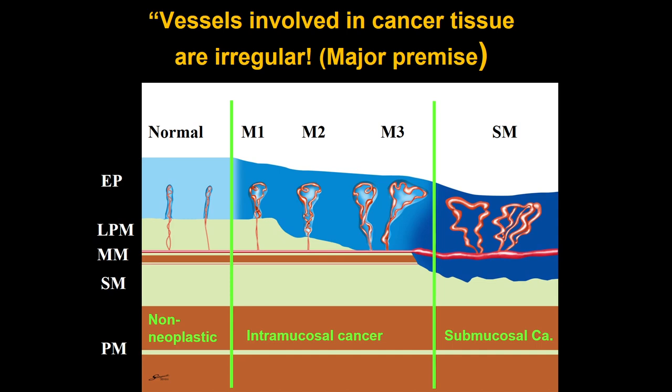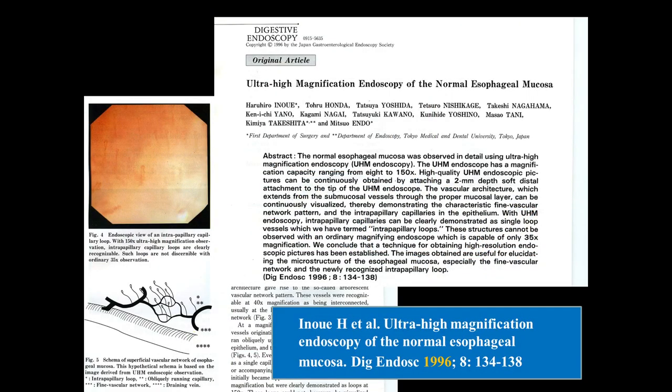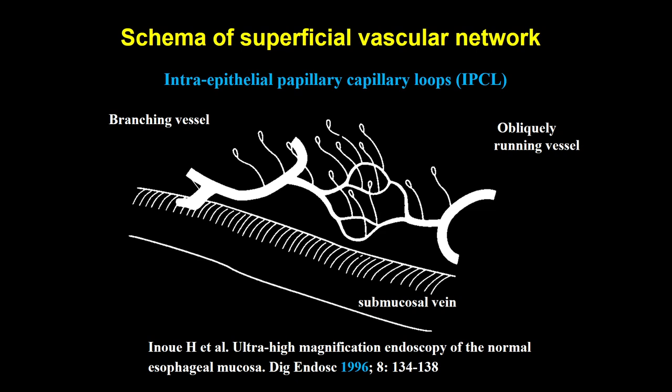We can very roughly classify the findings. Non-neoplastic findings versus intramucosal cancer — M1, M2, M3, and then SM massive invasion — where the IPCL is totally destroyed and deformed. I myself, a long time ago — about 20 years ago — reported the IPCL using a magnifying endoscopy prototype. At that time, we didn't have NBI, just white light magnifying endoscopy. This is a schema from 20 years ago showing the superficial vasculature of the squamous esophagus.